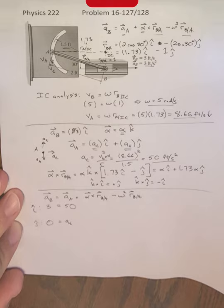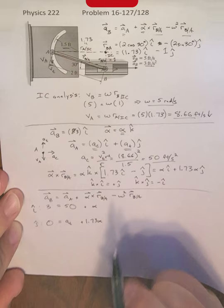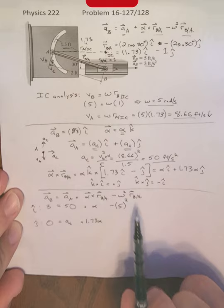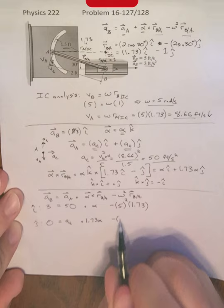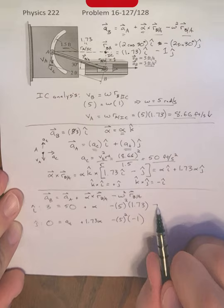Alpha cross rAB, we just found that up here. So this is going to be plus alpha, this is going to be plus 1.73 alpha. Then we have minus omega squared, omega is 5 squared, multiplied by the x component of rB/A, that was 1.73. This is minus 5 squared, multiplied by negative 1. That's our other component. So now we have it down to two equations and two unknowns.